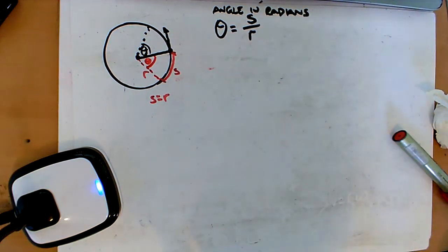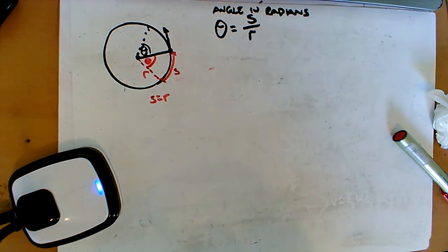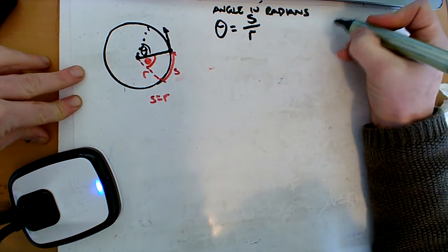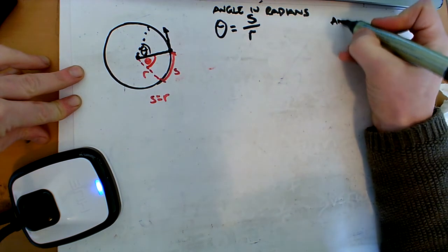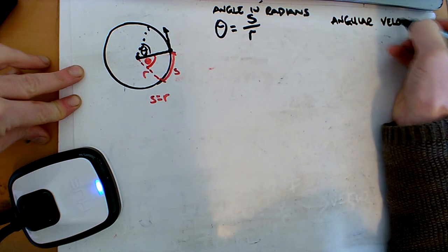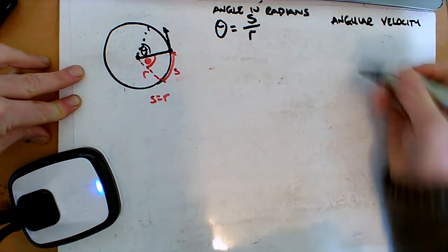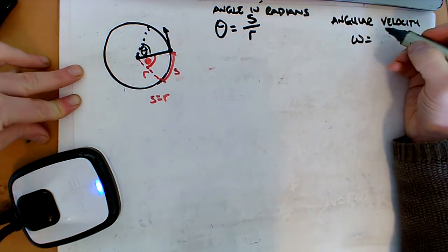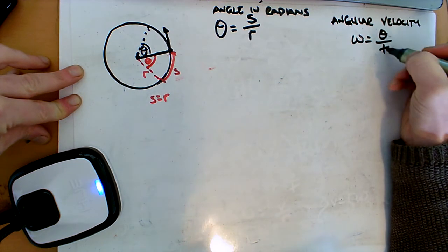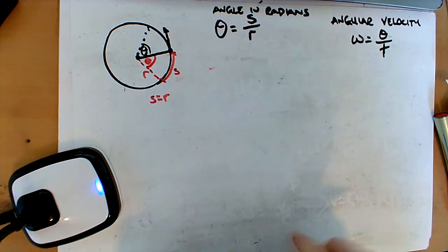So now, the last one we did, we got our other equation, didn't we? That we looked at the angular velocity, and we'll stick it over here. So angular velocity. Okay, and we worked out that that was the little omega was equal to theta, so the angle changed over time.